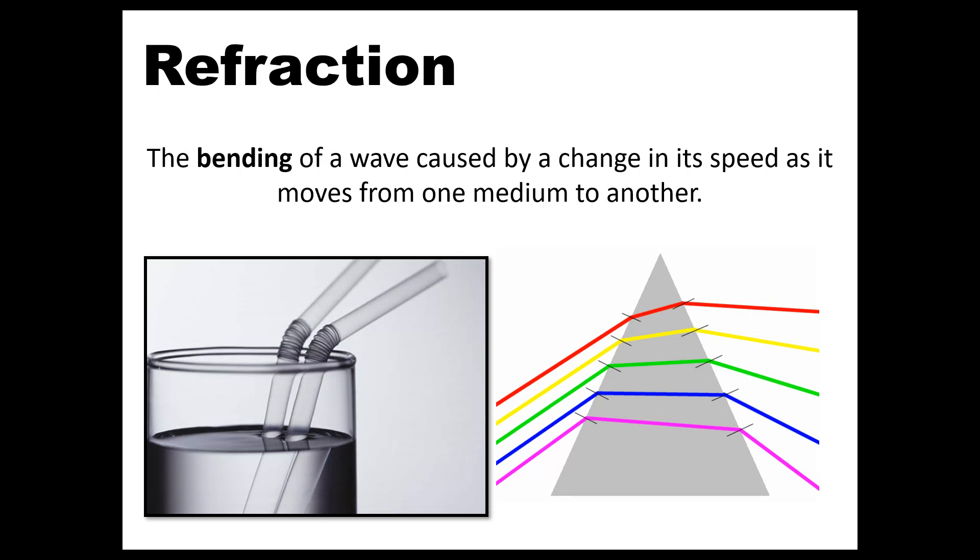So let's start with refraction. Make sure that you get all four of these wave phenomena in your notes, a definition and an example for each. So refraction, by definition, is the bending of a wave, and these waves bend because they change their speed when they move from one medium to another. So when a wave is traveling through a medium, and then it happens to change medium, it's going to cause a bend in the wave because the wave is going to change speed.